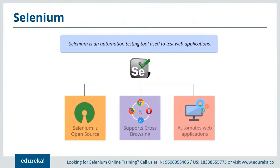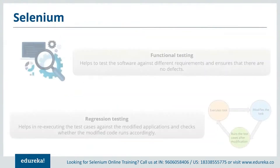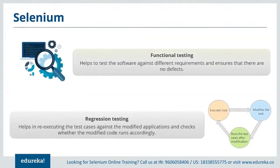Talking about the license of this tool — Selenium is free of cost; the user does not have to pay for any of the versions. The latest version available is Selenium 3.1. Refer to the link in the description for end-to-end guidance on setting up Selenium. Selenium is highly flexible when it comes to functional and regression testing. Functional testing helps in testing the software against the business requirements and ensures no defects in the system, while regression testing helps in re-executing the tests against the modified application.